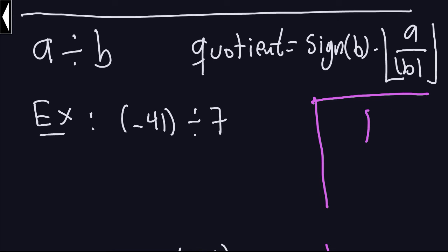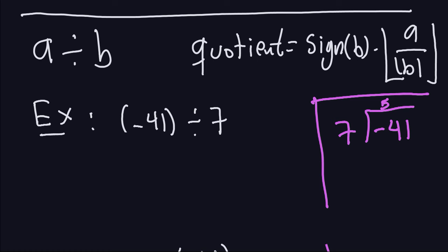I'm going to take the number negative 41 divided by 7. If you think that 7 into 41 goes 5 times, you're going to be incorrect. The reason is that if you take 5, multiply it by 7, that's 35. If you subtract it from 41, that will give you a negative remainder. We don't want a negative remainder. So we want to use this formula to compute the quotient of that division. Once we compute the quotient, we can go ahead and compute the remainder.